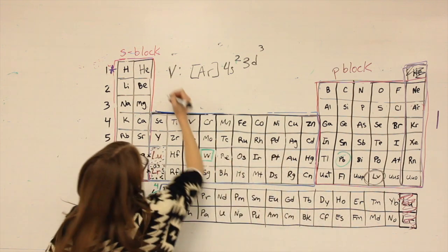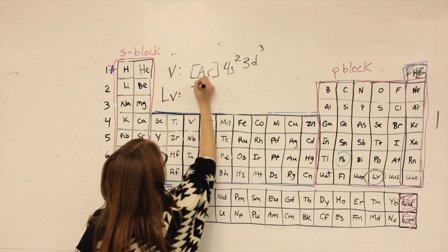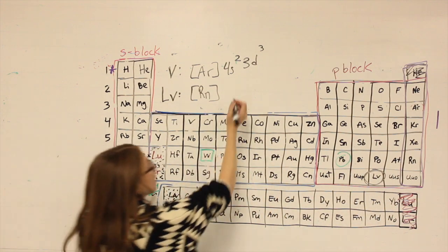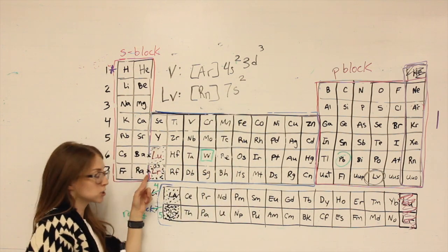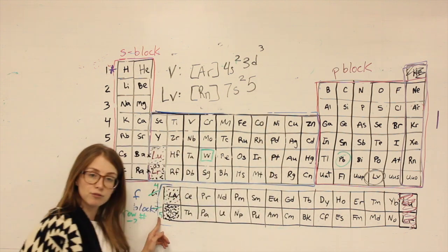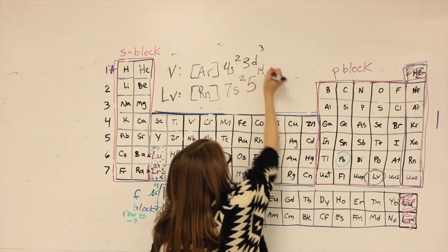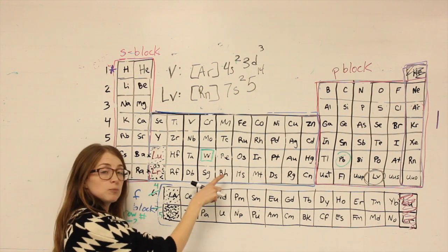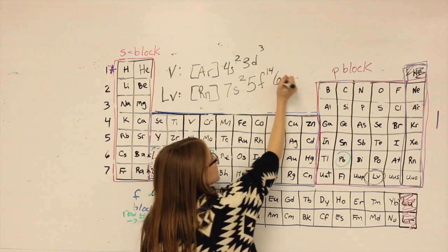I'll do Lv again. For Lv, using the shortcut, the noble gas before it is radon. Now I'm here. Seventh row, S area, two spaces to go through. Since I hit the dark gray square, I go to the other dark gray square. I'm still in the seventh row, but I subtract two and write a five because we're in the F area. Counting across, we get 14. I come back to where I left off the beginning of that dark gray square. Seventh row, but we're in the D-block now, so I subtract one and write a six.